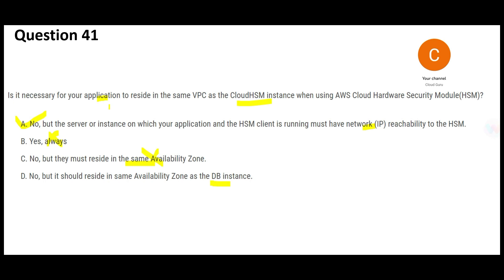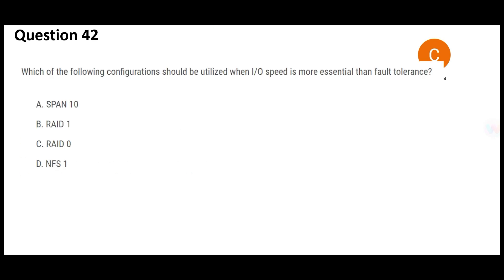Option D assumed a DB exists — we cannot conclude that. So Option A should be the right answer. Now, if for some reason you want more IO speed compared to fault tolerance — like in Formula One racing where the car might crash but you want top speed — we have RAID 0 configuration for that purpose.